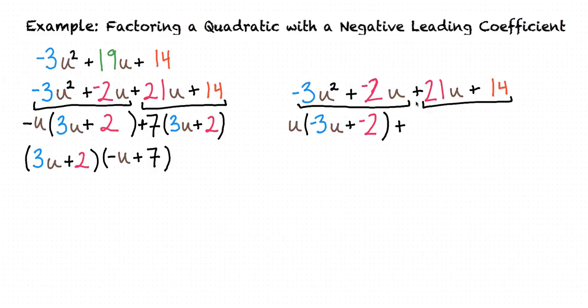Now we can factor out our second term. Before, we factored out a 7 from both 21u and 14. However, if we do that again, then we would be left with (3u + 2), just like we had before, and our two factors would not match each other.